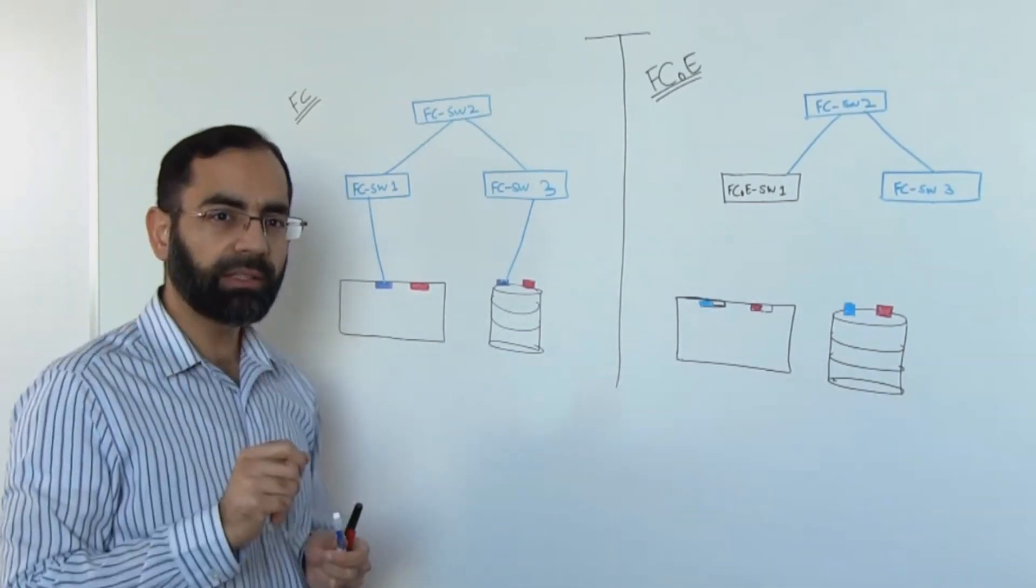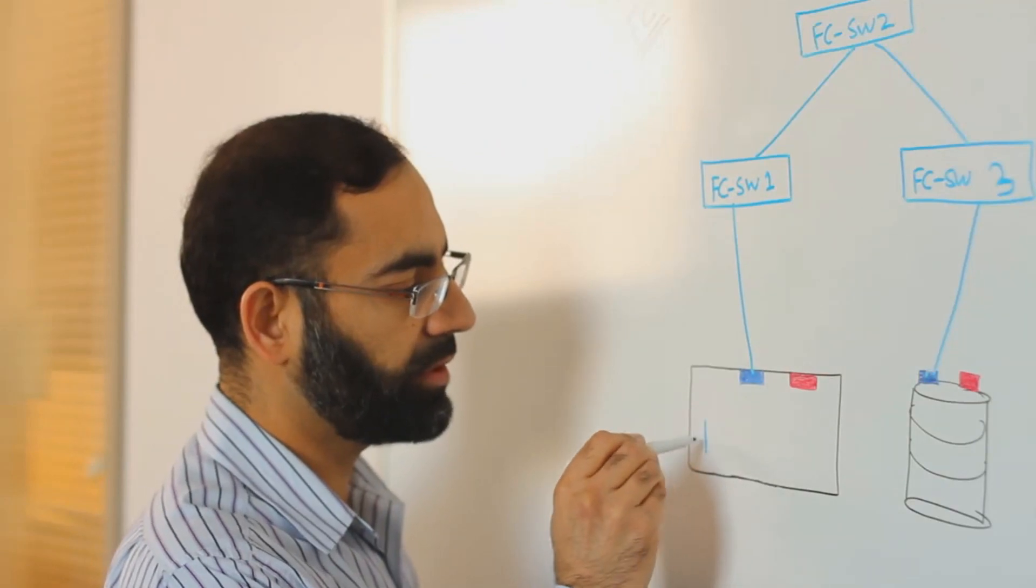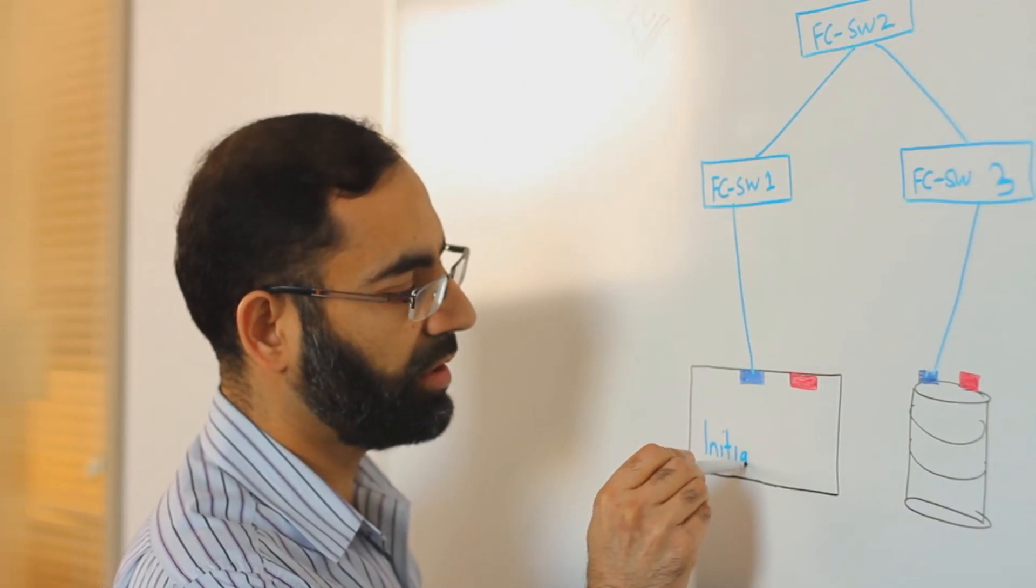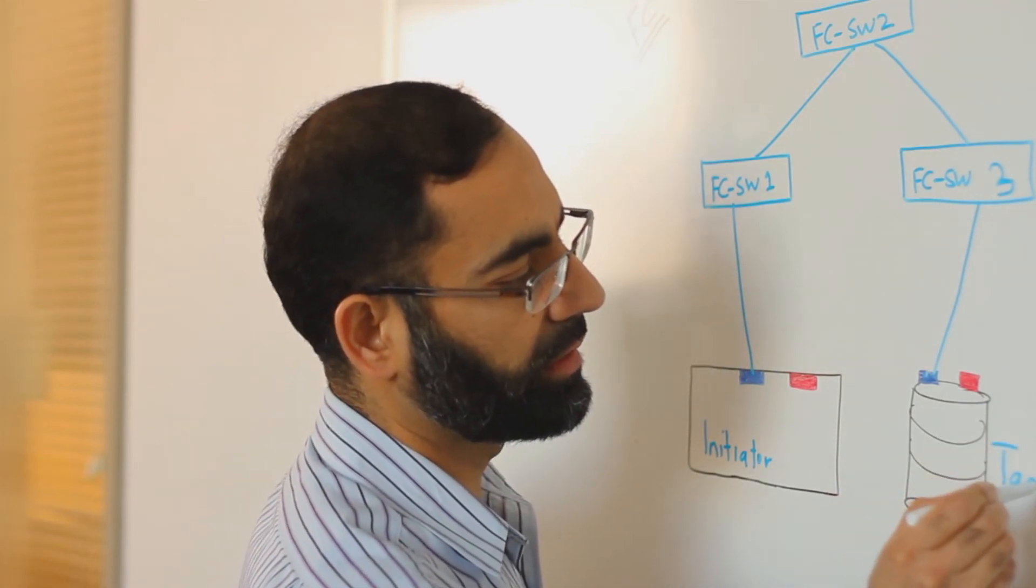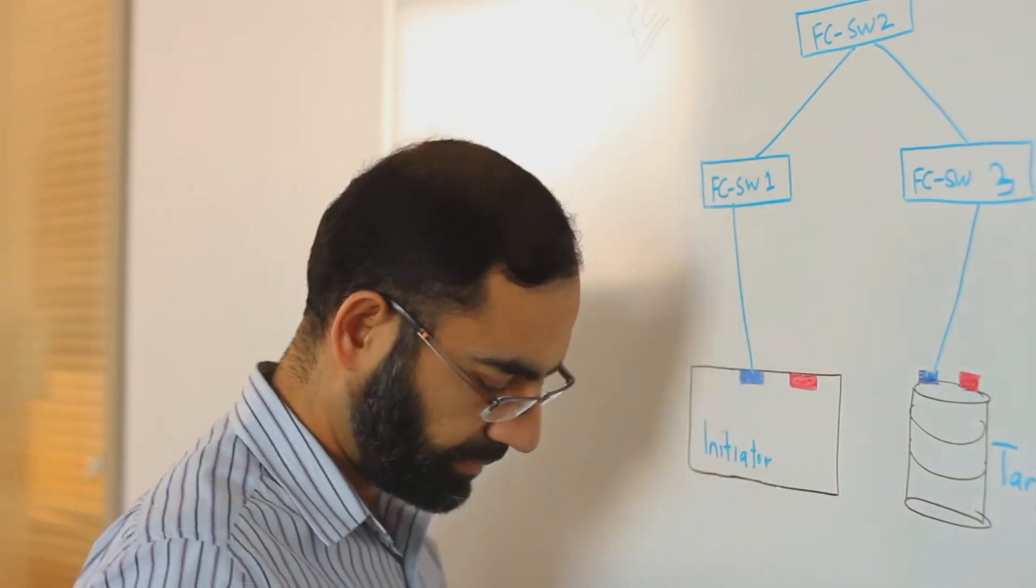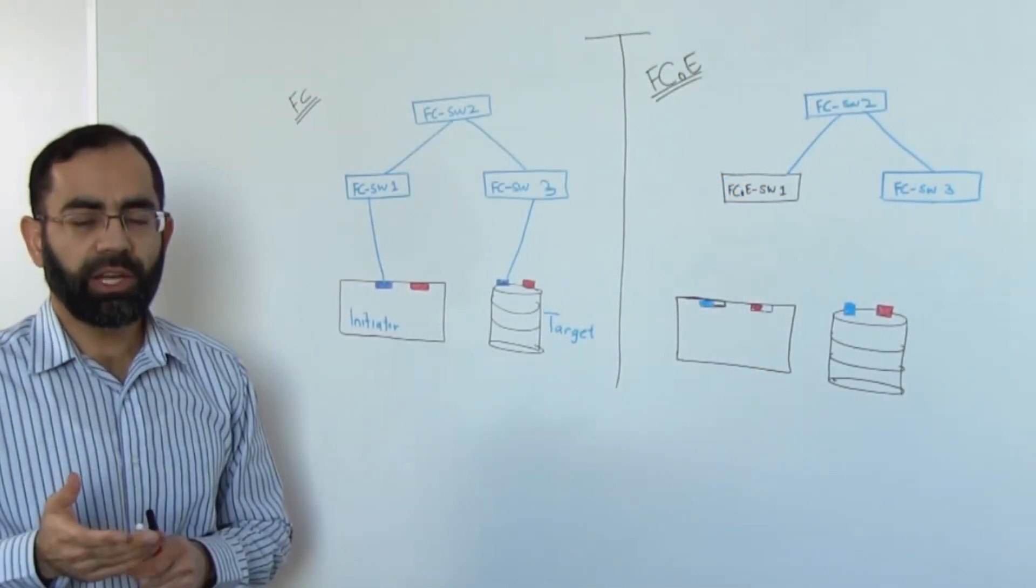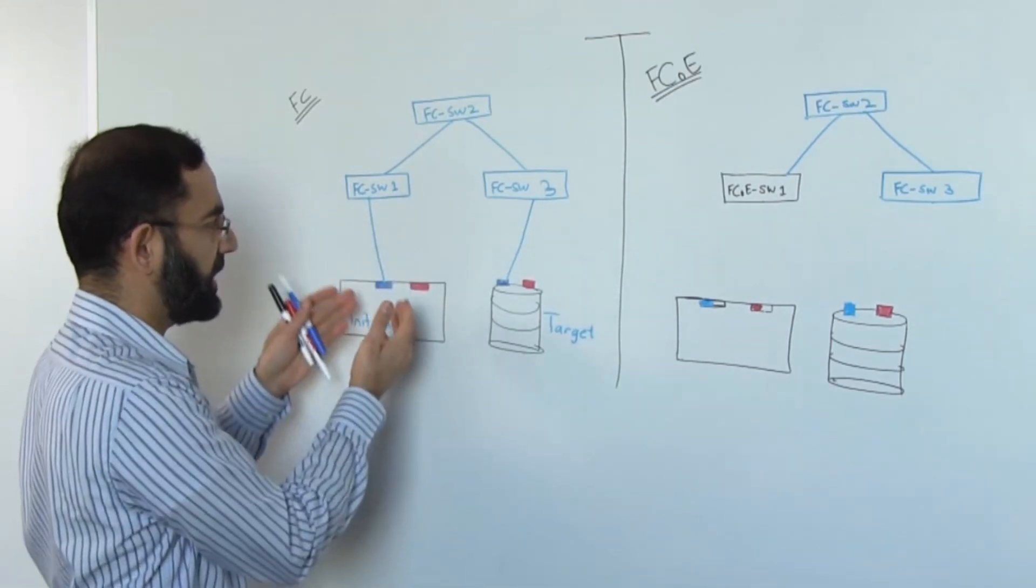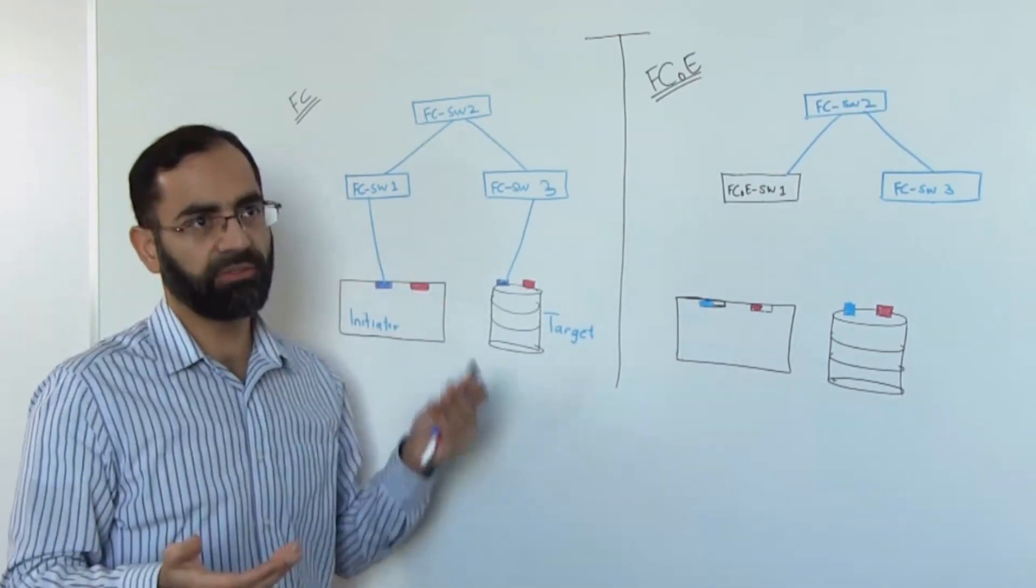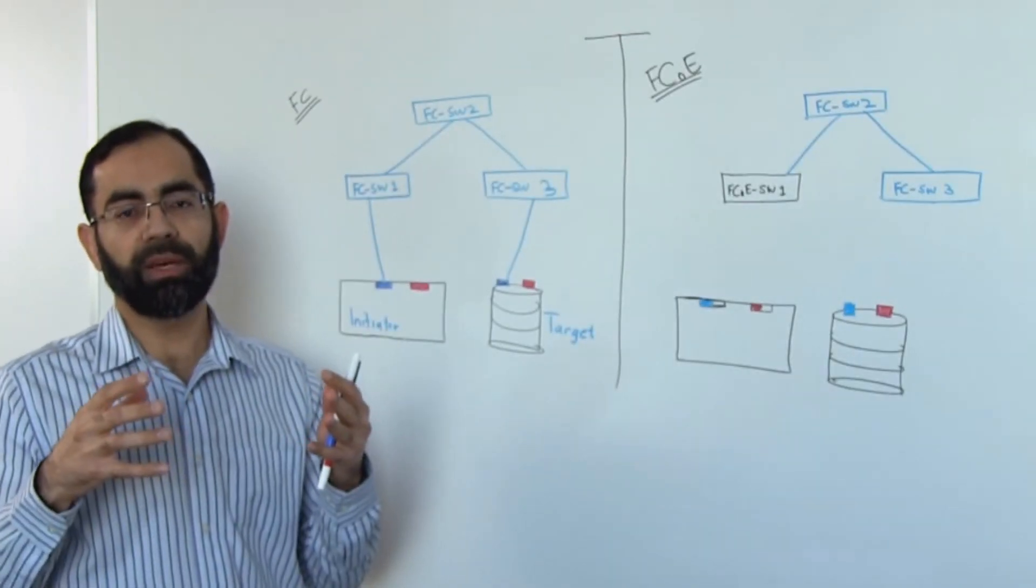In the storage world, server side is commonly referred to as initiator and storage side is commonly referred to as target. We have shown one of the fabrics, and the redundant fabric is going to be Fabric B. Collection of these two fabrics forms a SAN.